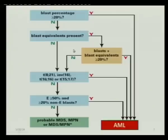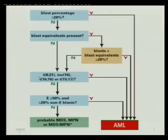If blasts and blast equivalents are less than 20% but the patient is highly suspicious for acute leukemia, proceed to cytogenetics to check for recurrent cytogenetic abnormalities such as translocation 8;21, inversion 16, translocation 16;16, or translocation 15;17. With those translocations, you do not need to fulfill the 20% threshold — you can diagnose acute leukemia if those translocations are present.